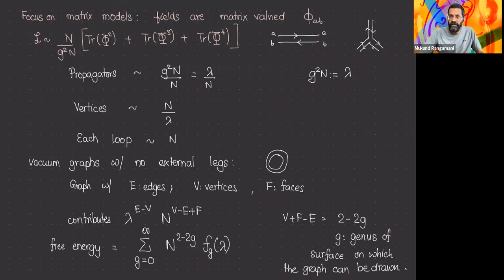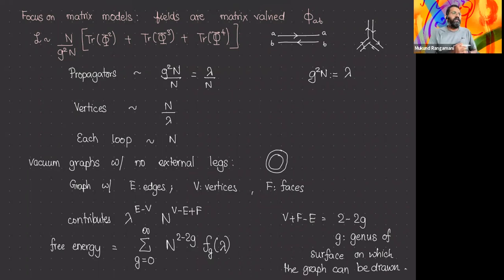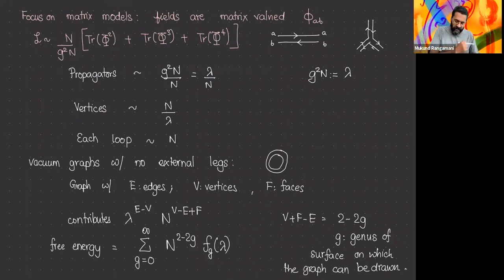For non-supersymmetric theory, we don't know what the worldsheet dual is. However, that exploration rather indirectly inspired the AdS/CFT correspondence, because once we upgrade the discussion to supersymmetric field theories, we do know what the string theory is. Let me say a few words about the large-N counting for matrices before talking about the other examples. Let me pause to see if people have questions about the counting in matrix models.